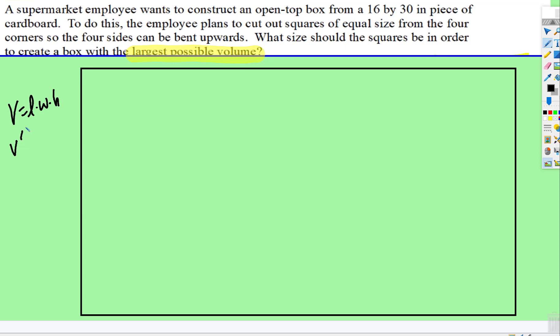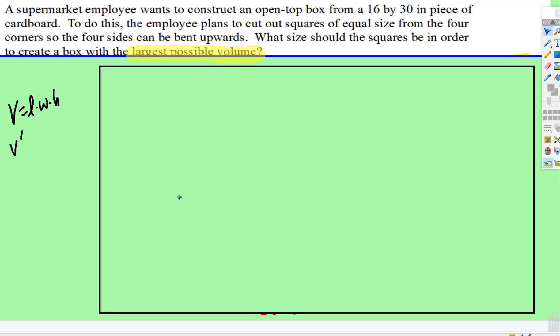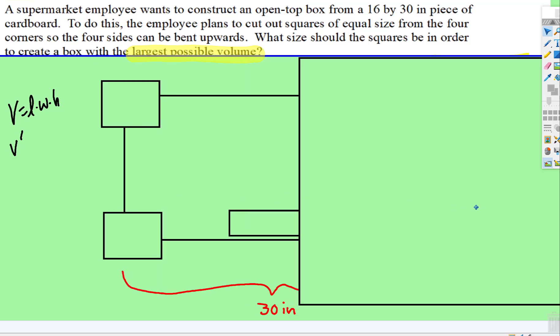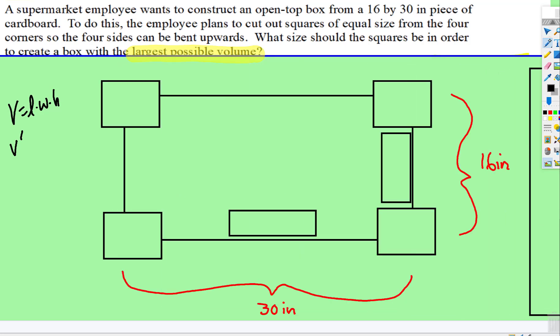The volume of a rectangle is length times width times height, and we're going to want to maximize that. So that will be the derivative of V. So the diagram, we know that the flat piece of cardboard is a width of 16 inches and the length of 30 inches.